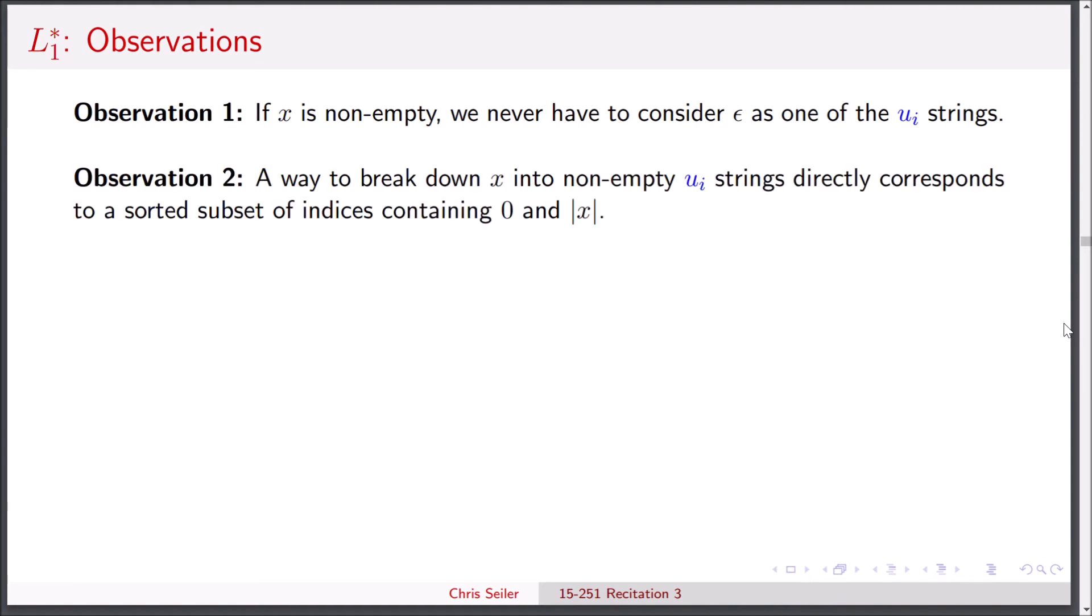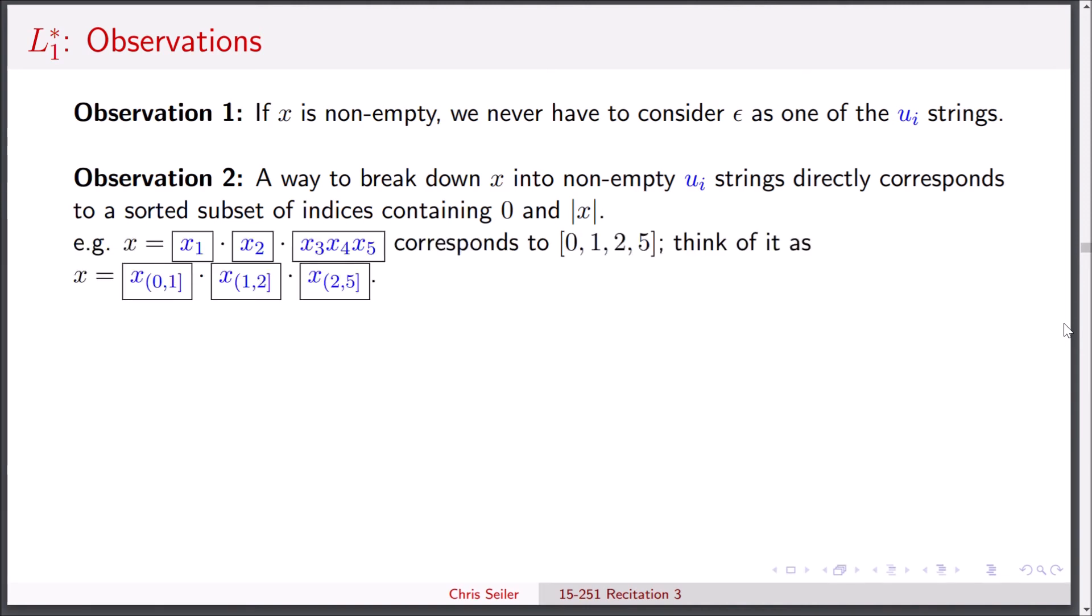Another nice observation is, now that we know x only has to be broken down into non-empty strings, one of these breakdowns corresponds to a sorted subset of indices which contains zero and the length of x. So what do I mean by that? Let's look at an example. The first time we broke up x into x1, x2, and x3 through x5 corresponds to the list 0, 1, 2, and 5. We can think of these numbers as indicating the start and end position of each substring we're looking at. And since we're not considering empty strings, we don't have to repeat any of these indices. Now why is that nice? Well that's nice because there are only a finite number of these kinds of strings. So whenever x is non-empty, we don't have to do an infinite loop to check all of these possibilities.